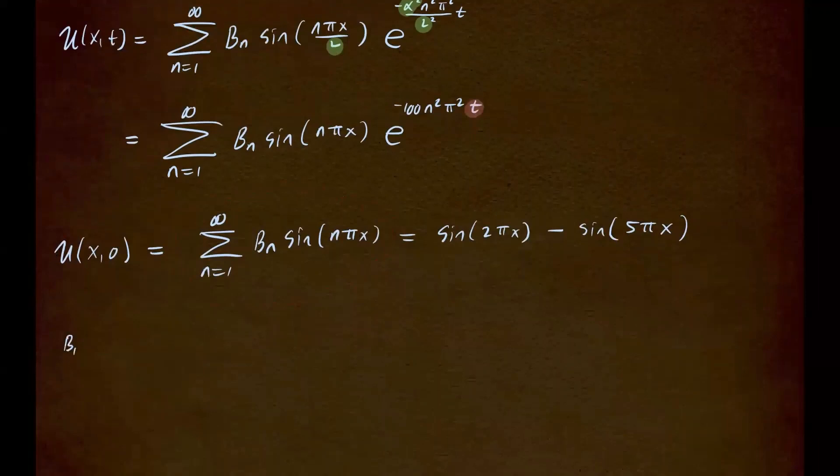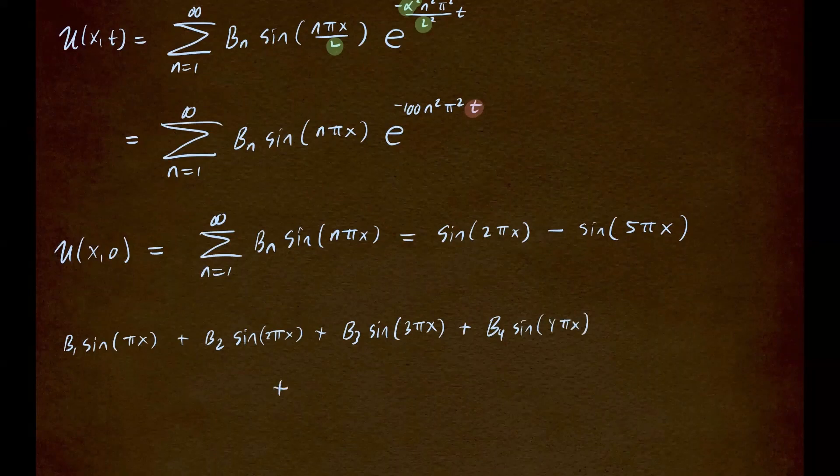So this sum, I'm going to write out a few terms, and then you'll see how it looks like. So if n equals 1, you have b1 sine of n is 1. So that's pi x plus when n equals 2, you have b sub 2 sine of 2 pi x. When n equals 3, you have b sub 3 sine of 3 pi x plus when n equals 4, you have b sub 4 sine of 4 pi x plus... I'm going to write down one more term,